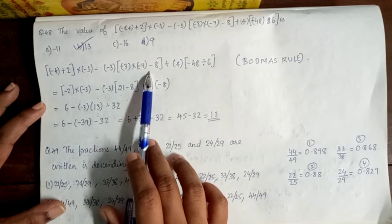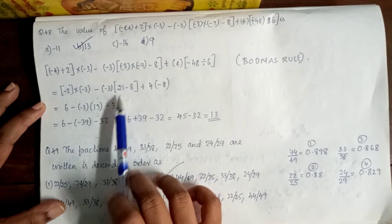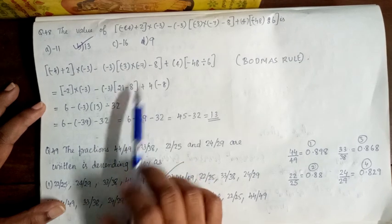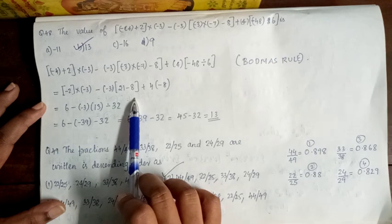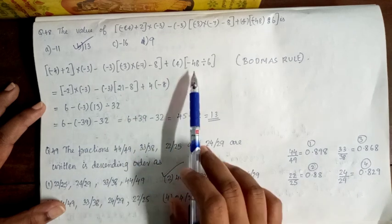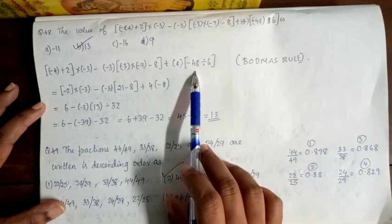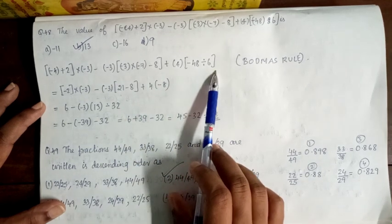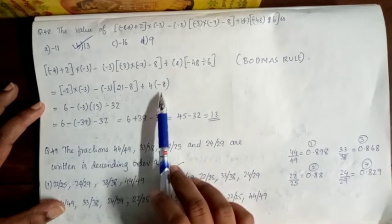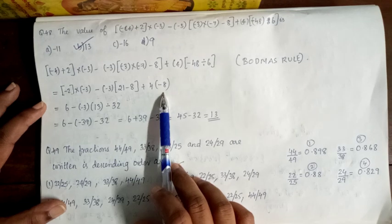So, minus 3 into minus 8 is 24, so 24 minus 8 gives this result. Now, minus 48 divided by 6 is minus 8.